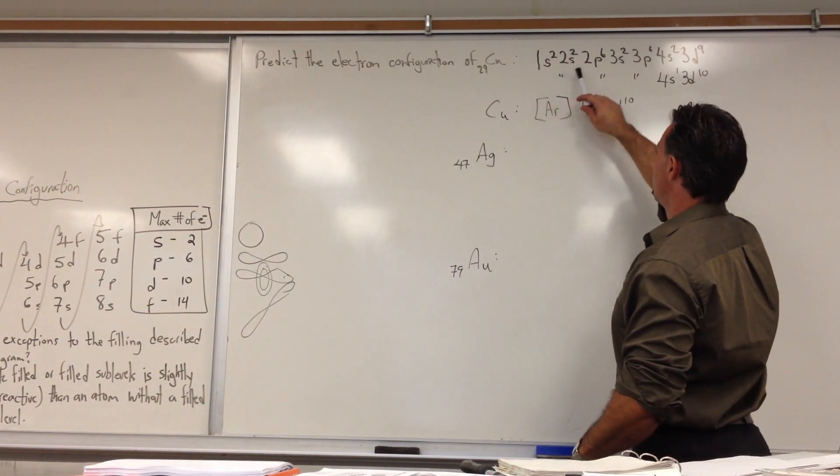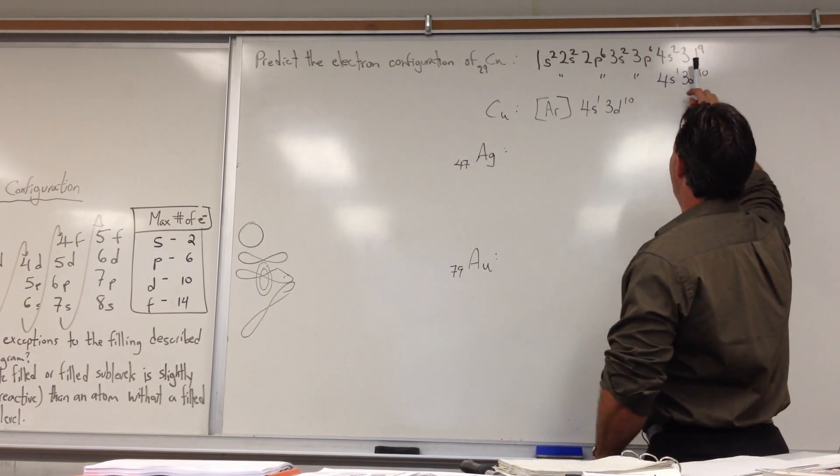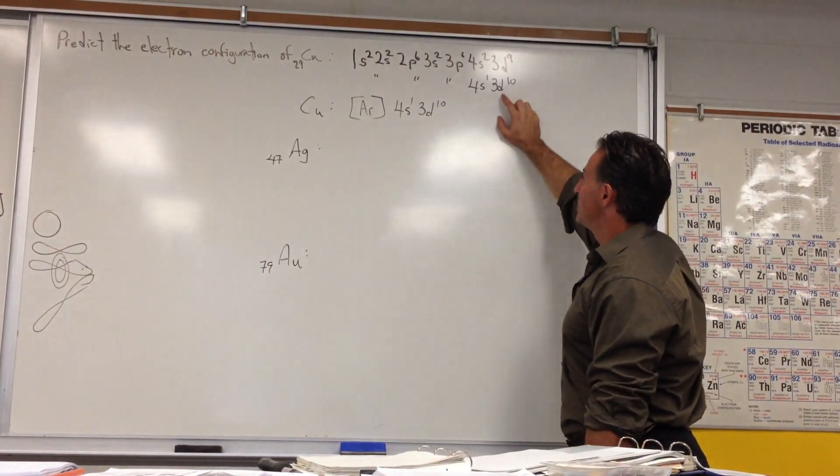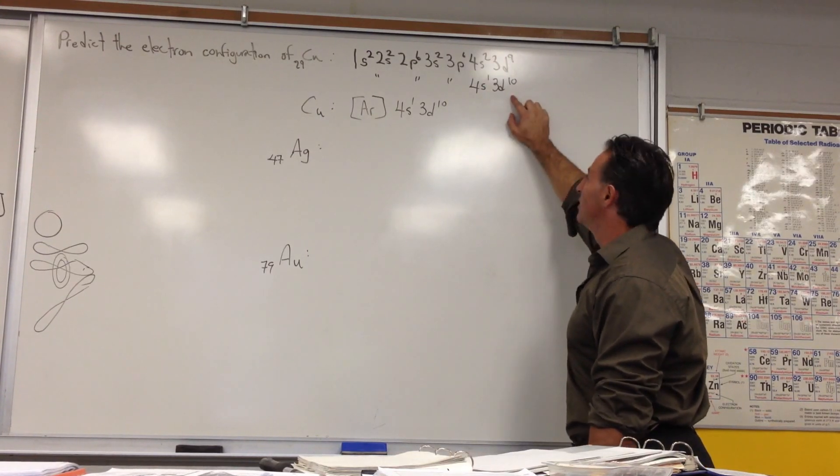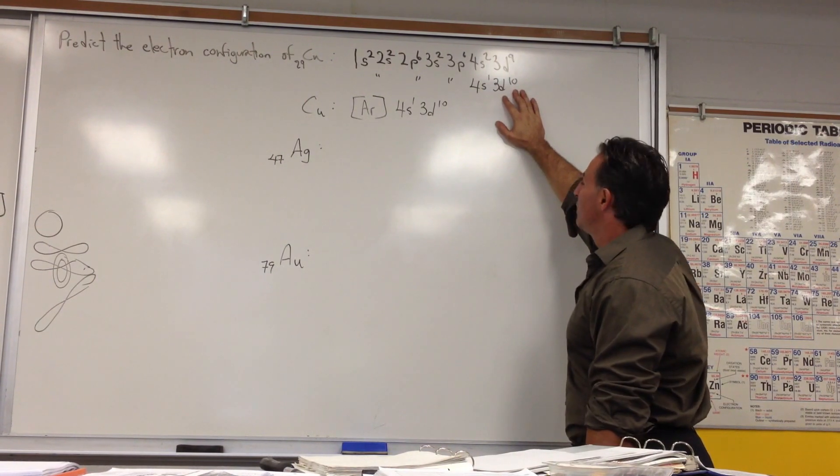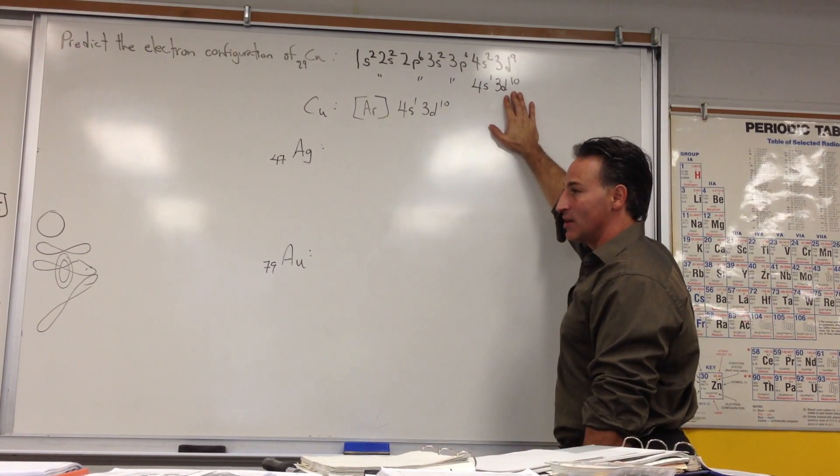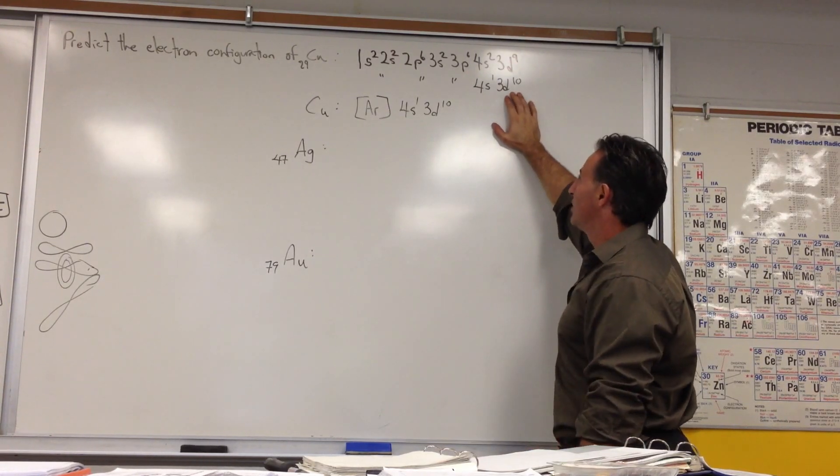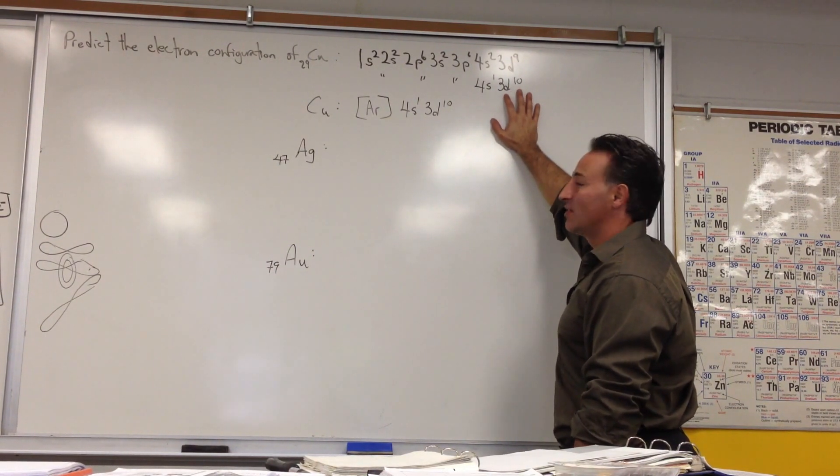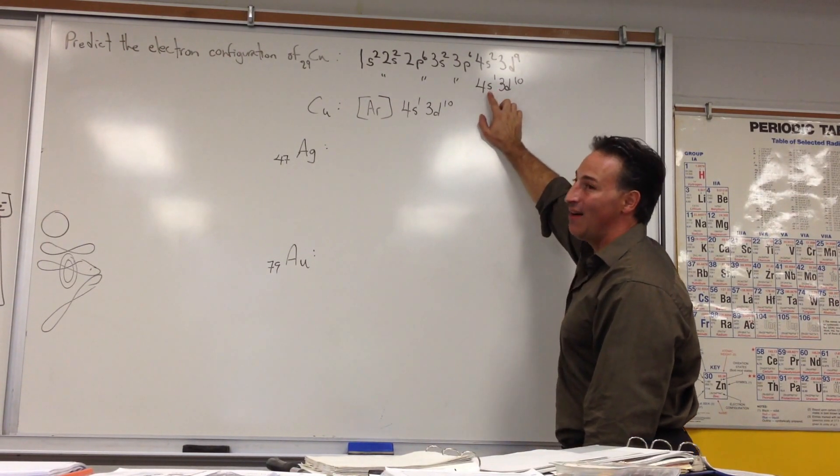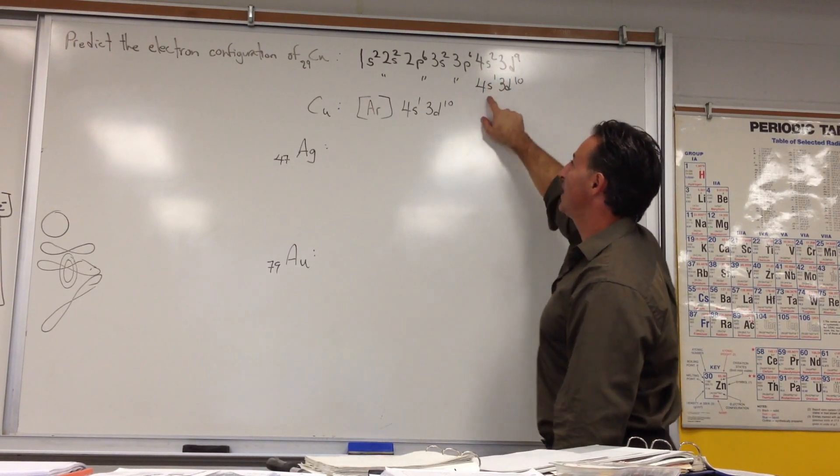For copper with 29 electrons, the configuration is 1s2, 2s2, 3p6, 3s2, 3p6, following the pattern as usual. Once we get the 4s2, which is 1, 2, 3, 4, right at calcium, we're only 9 jumps away from copper. So we would expect it to be 4s2, 3d9. But what really happens is an electron is promoted from the s orbital into the 3d orbital. So that now this is a completely filled orbital. And I guess there's a certain amount of symmetry that helps reduce the strain in the atom.